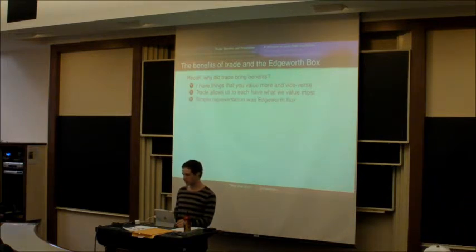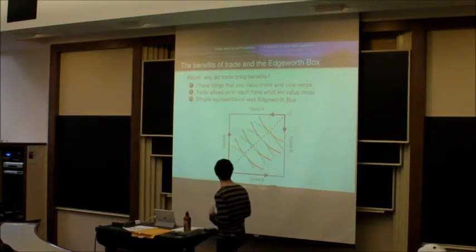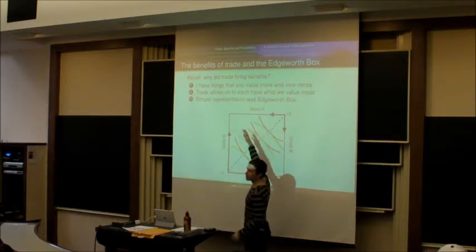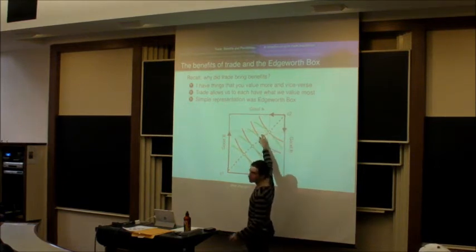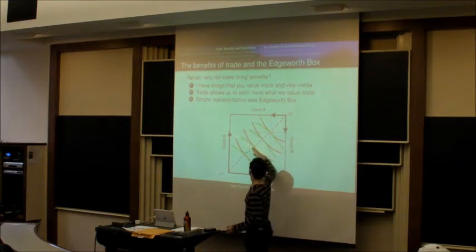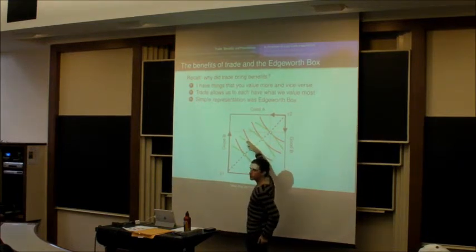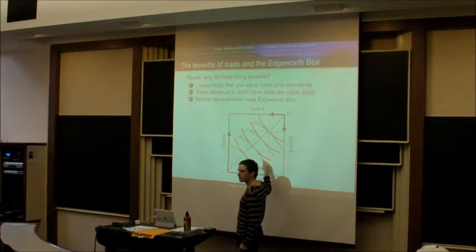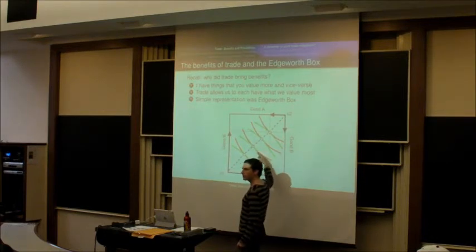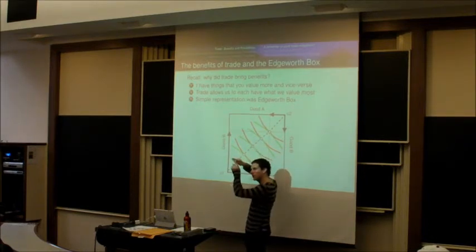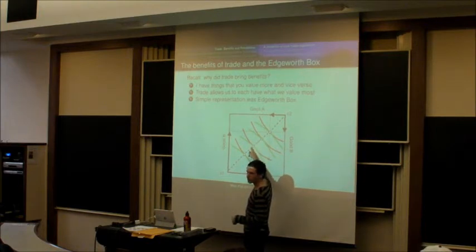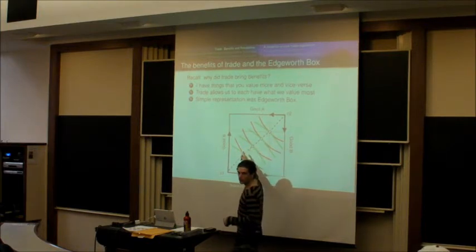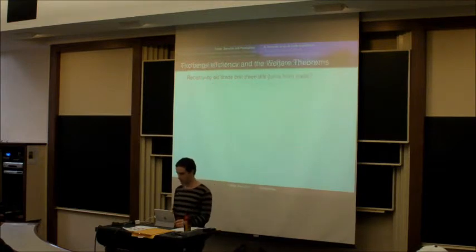So, trade allows us each to have more of what we value. And a simple way to represent this was the Edgeworth box, right, which you guys were talking about. People have indifference curves between the different goods. They start with some endowment, and they can trade up to a higher indifference curve. And they'll trade at a point where their two indifference curves are tangent, because that's the point where they're both tangent to the prices at which they trade. And that's an optimal point, because when their indifference curves are tangent to one another, there's no way that without moving me to a lower indifference curve, I can get you to a higher indifference curve, right? So, I mean, that was just what you guys did last term.